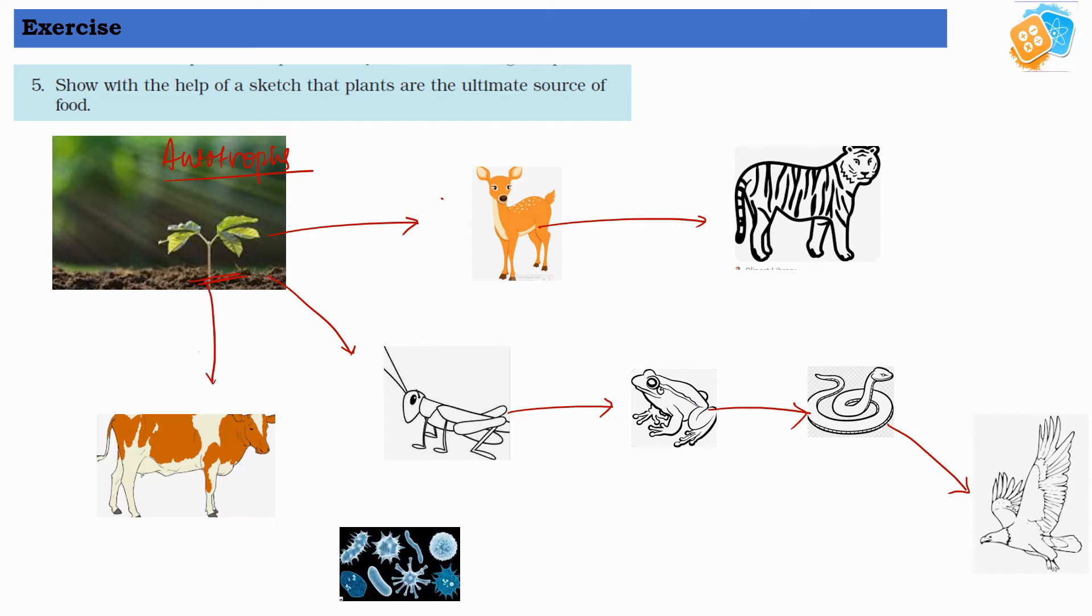Plant will be eaten up by the cow, and when cow and other animals die, this dead and decaying material will get decomposed by the saprotrophs. So each food chain will start from the autotrophs because they are making their own food and they are the very first step of any food chain.